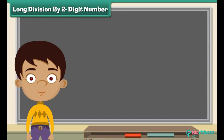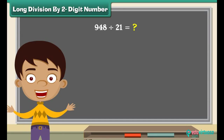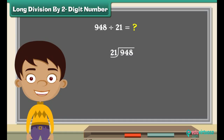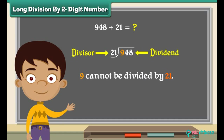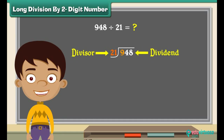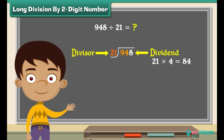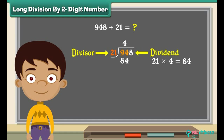Let us now learn to divide nine hundred forty-eight by a two-digit number, twenty-one. Nine hundred forty-eight is the dividend and twenty-one is the divisor. Nine cannot be divided by twenty-one, so look at the first two numbers from the left in the dividend. Divide ninety-four by twenty-one: twenty-one fours are eighty-four. Write four above ninety-four and eighty-four below ninety-four. Subtract eighty-four from ninety-four and write the answer below.